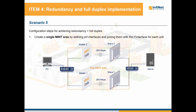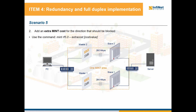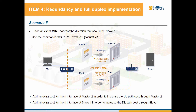In order to achieve full duplex communication, we will need to create only one extended mint area. The first configuration step will be to define PRF interfaces and join them with the RF interface for each unit, as we can see in the picture. At this point, mint will have full visibility of the available path between the PC and the server. The fastest path or the path with the lowest mint cost is selected for routing the packets towards the mint destination node. Therefore, all we have to do is to add an extra mint cost for each radio link in the direction that should be blocked. You have to first check the costs for each path so that you can choose an extra cost value that will ensure a preferential path selection. Use the command mint rf5.0 minus extra cost at master 2 to increase the cost of the uplink path through the link between master 2 and slave 2, and similarly, we should increase the downlink path cost by adding an extra cost for the RF interface at slave 1.